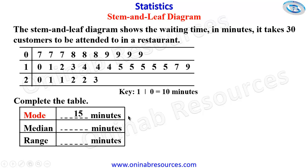Next we go to the median. The median means the middle number when the set of numbers is arranged in either ascending or descending order. This data has been arranged in ascending order: 7, 7, 7, 8, 8, 8, 8, 9, 9, 10, 11, 12, up to 23.